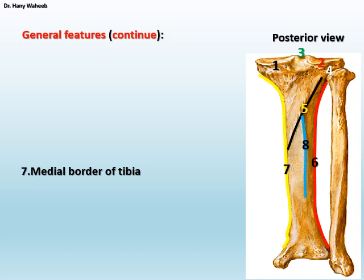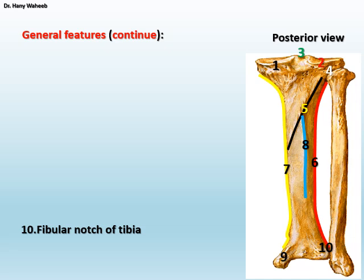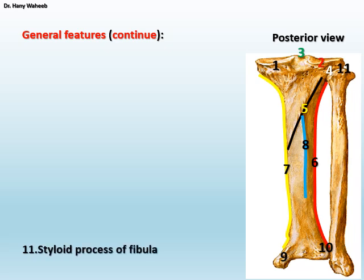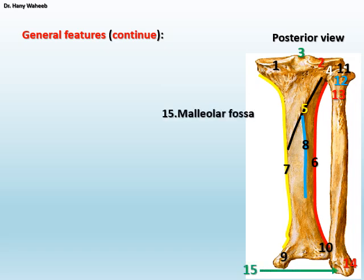Continuing the posterior view: 7. Medial border of tibia; 8. Vertical line on posterior surface of tibia; 9. Medial malleolus of the tibia; 10. Fibular notch of the tibia, on the lateral aspect of the lower end of the tibia directed towards the fibula; 11. Styloid process or apex of the head of the fibula; 12. Head of fibula; 13. Neck of fibula; 14. Lateral malleolus at the lower end of the fibula; 15. The malleolar fossa on the medial aspect of the lateral malleolus of the fibula.